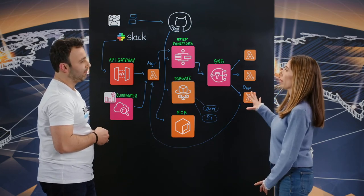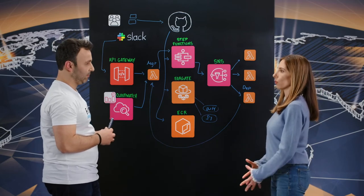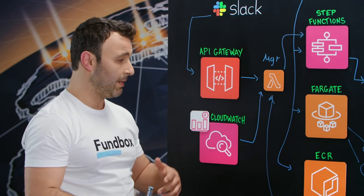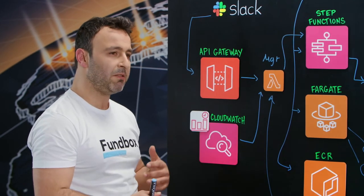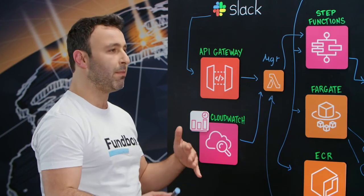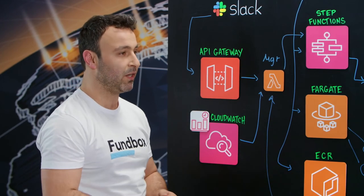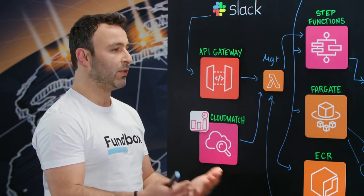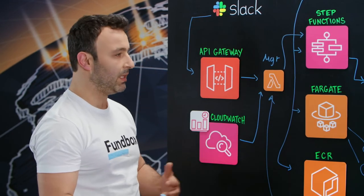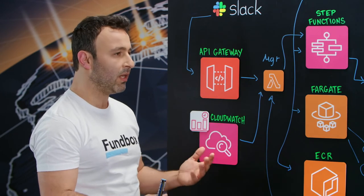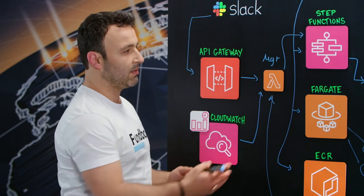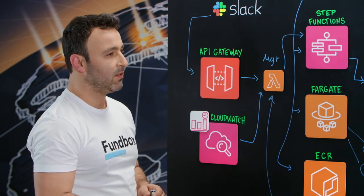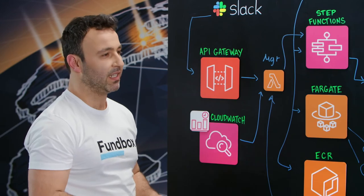How does the platform manage different volumes of jobs? Because we are leveraging serverless technologies, we don't care what happens underneath. Whether we have one job or hundreds of jobs at a point in time, it doesn't matter — the platform runs smoothly. We depend on ECS Fargate and Lambdas, which can scale very easily. So basically we reside on serverless technologies.